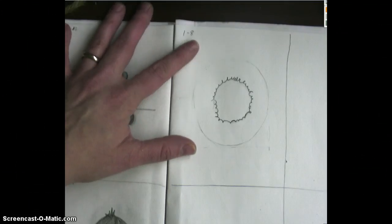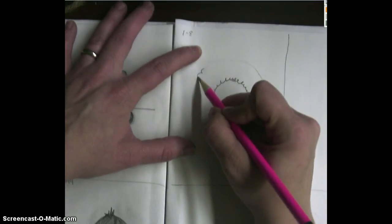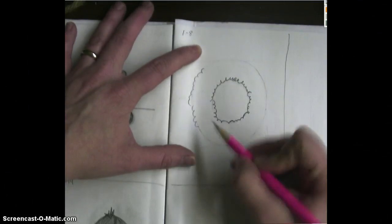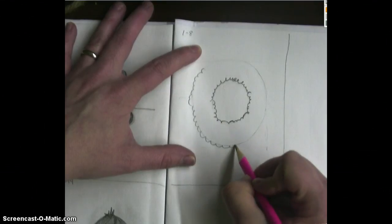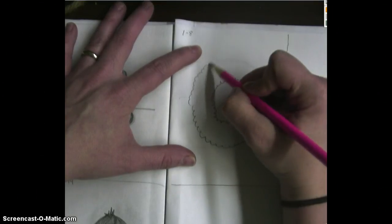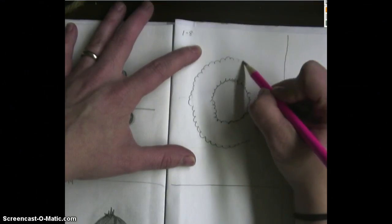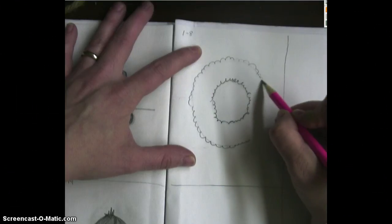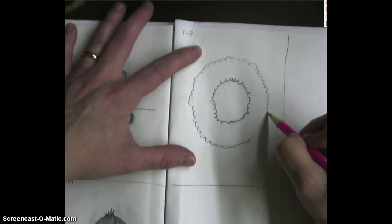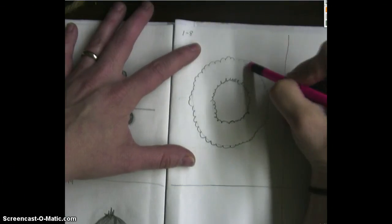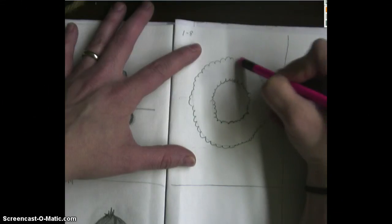All right, now we're going to do the outside. Same thing. Just follow that line, that little shade of a line that you had, and go all the way around. Okay, so I've gotten all of this taken care of.